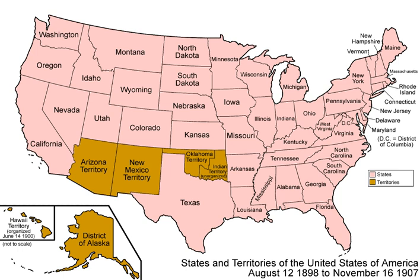Wheat farmers blamed local grain elevator owners, railroads and eastern bankers for the low prices. The first organized effort to address general agricultural problems was the Grange movement. It grew to 20,000 chapters and 1.5 million members. The Granges set up their own marketing systems, stores, processing plants, factories and cooperatives. Most went bankrupt. The movement also enjoyed some political success during the 1870s. A few midwestern states passed Granger laws, limiting railroad and warehouse fees.